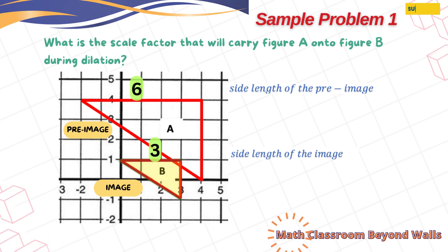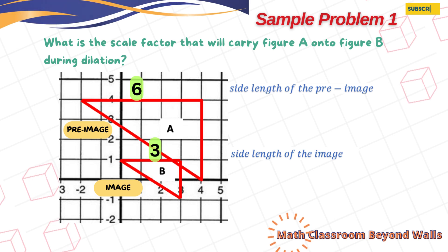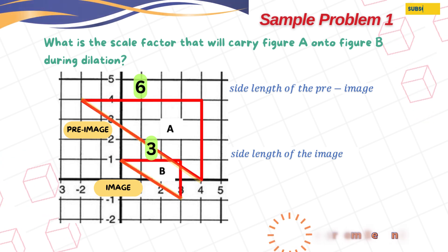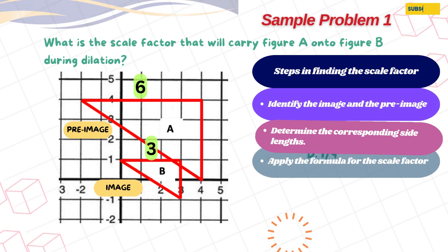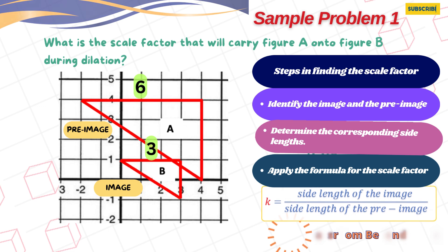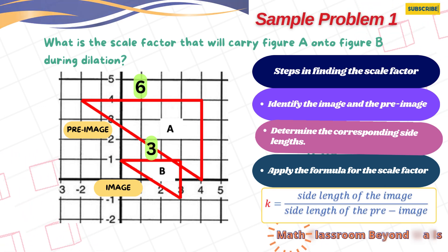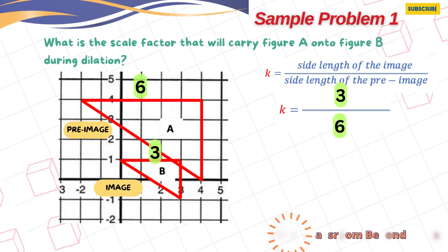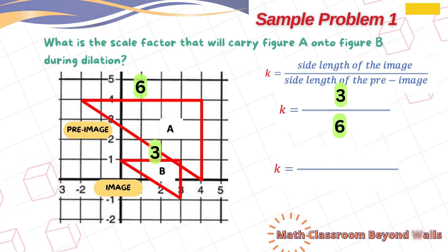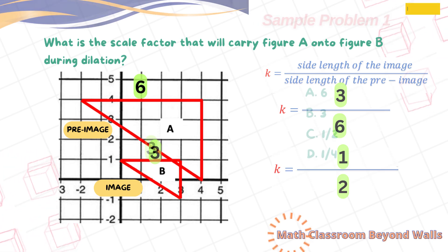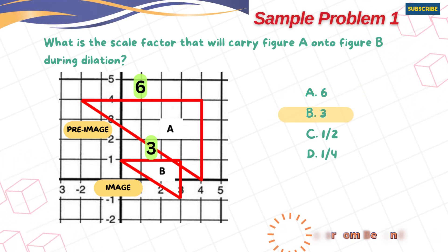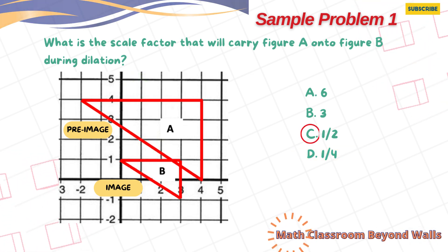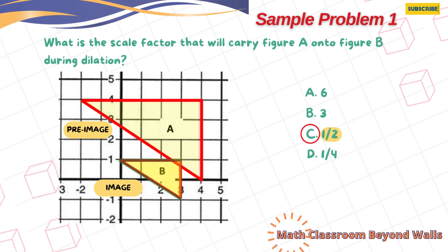We choose horizontal or vertical sides because it is easy to find their lengths — the diagonal side is tricky and requires a different method. Third, we apply the formula: k equals side length of the image over side length of the pre-image. Plugging in the values: k equals three over six. Simplifying gives k equals one half. The answer is option C. This answer is reasonable because the image is smaller than the pre-image.